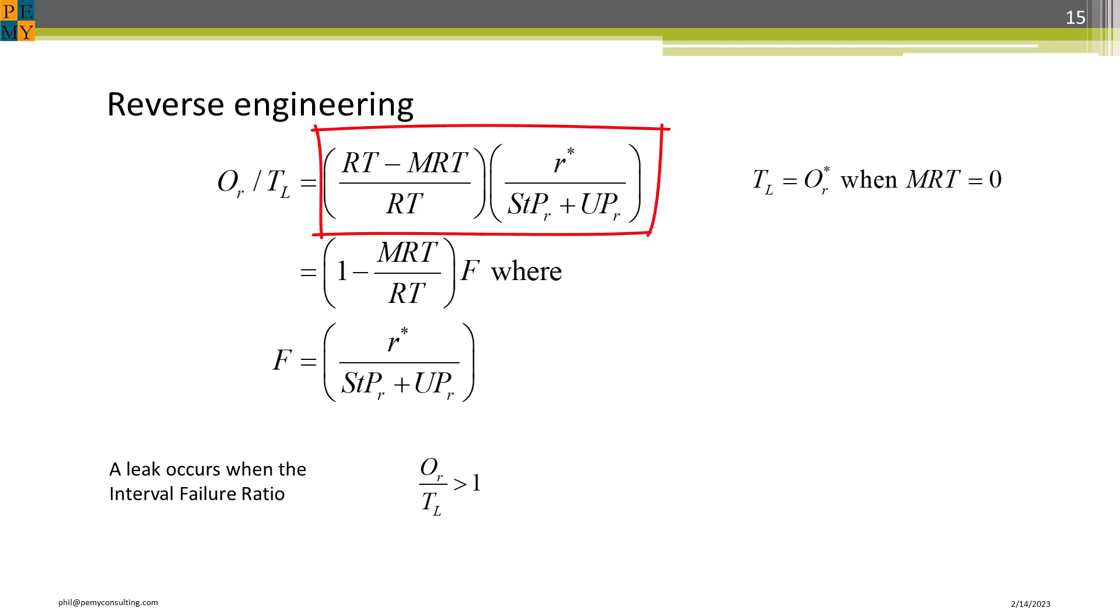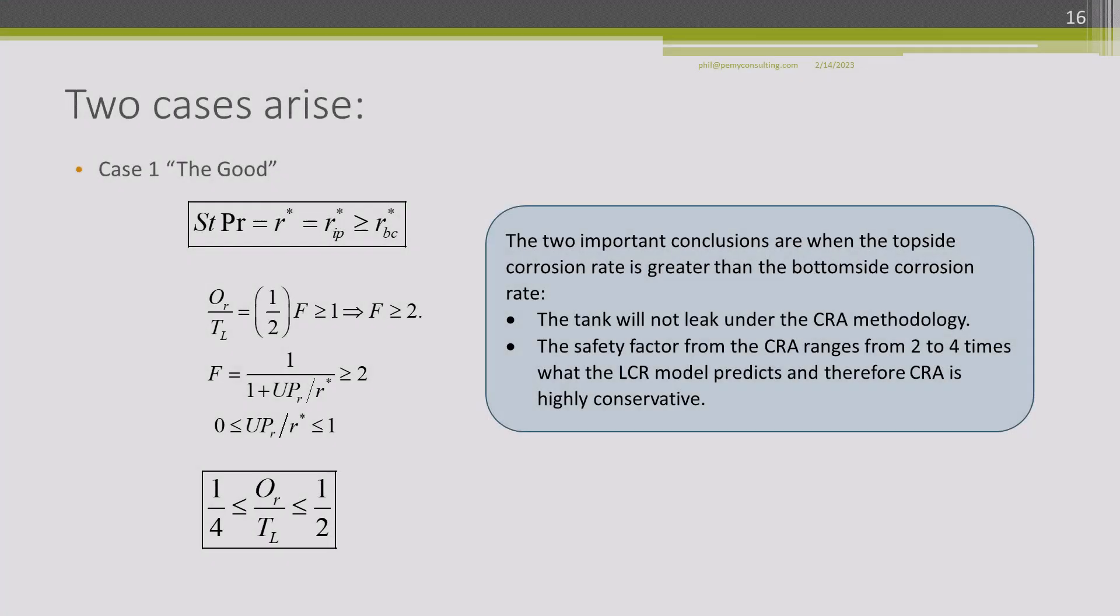You can see that there are two factors. The left factor will be 1 half, in our case, because MRT divided by RT is 100 over 200. The rate factor is a true maximum LCR rate, divided by the sum of the ACR corrosion rates. This is explained in detail in the white paper that is available from our website or by emailing me.